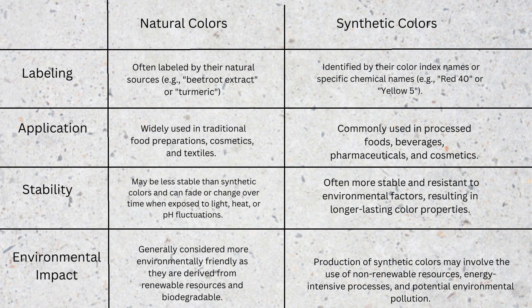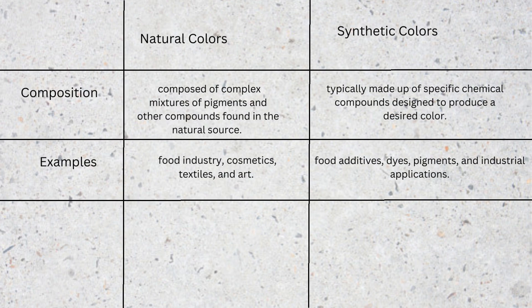Eighth, environmental impact: natural colors are generally considered more environmentally friendly as they are derived from renewable resources and are biodegradable. The production of synthetic colors may involve non-renewable resources, energy-intensive processes, and environmental pollution. Ninth, composition: natural colors are composed of complex mixtures of pigments and other compounds found in natural sources, while synthetic colors are typically made up of specific chemical compounds designed to produce a desired color. Applications include natural colors in food, cosmetics, textiles, and art, and synthetic colors in food additives, dyes, pigments, and industrial applications.